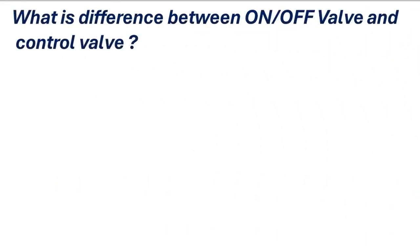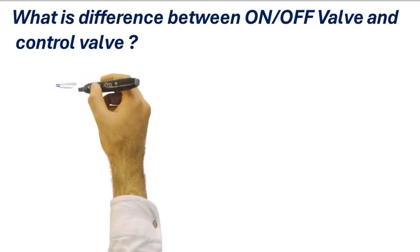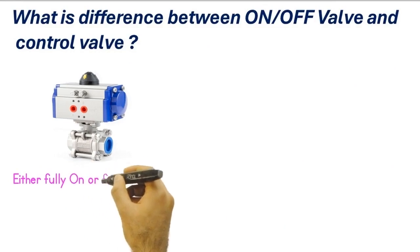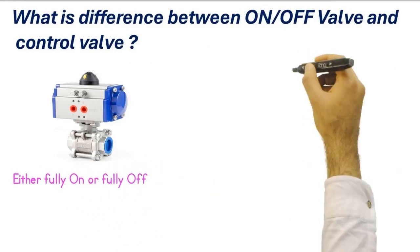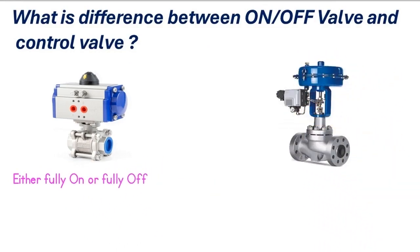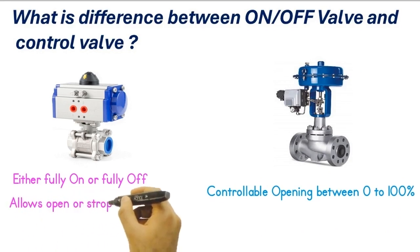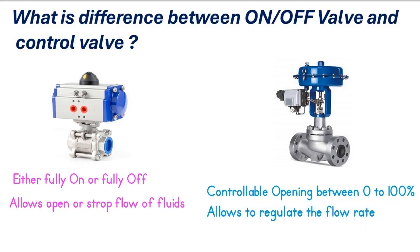What is the difference between an on/off valve and a control valve? An on/off valve works in two modes: it can be either fully open or fully closed. A control valve, however, is fully controllable, meaning its opening can be controlled anywhere between zero to one hundred percent. On/off valves allow fluid flow to be fully opened or stopped, while control valves allow regulation of the flow rate.